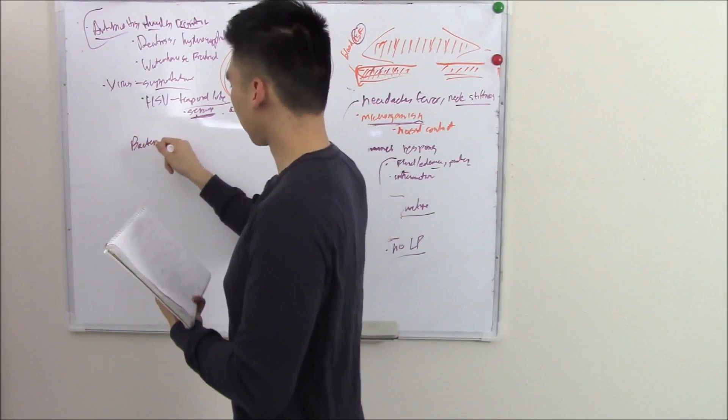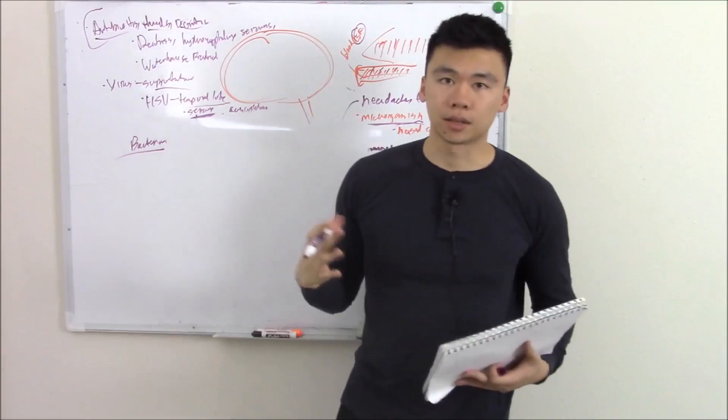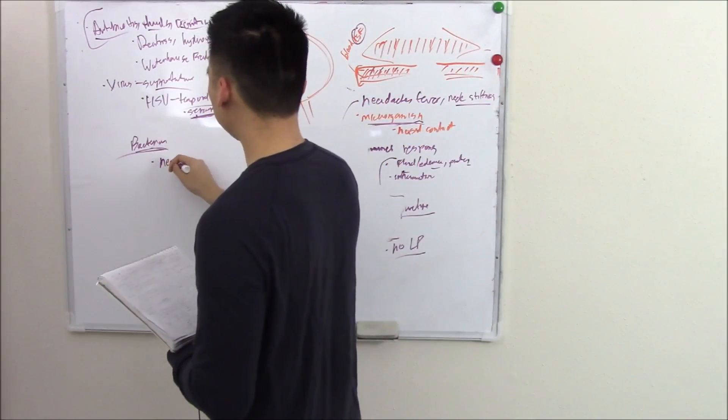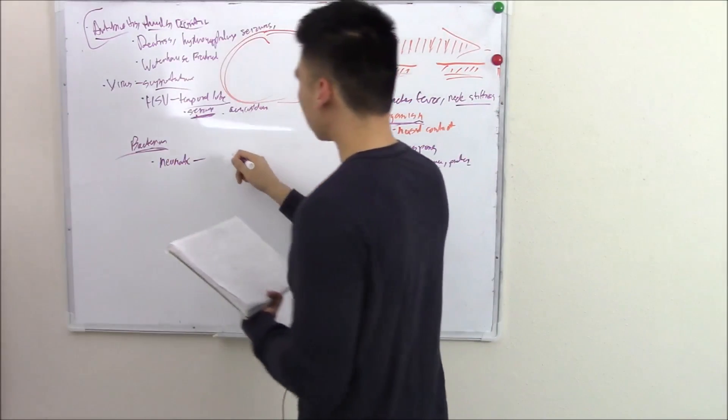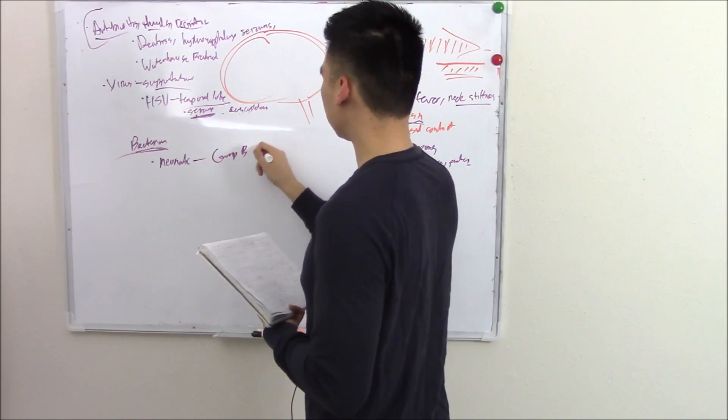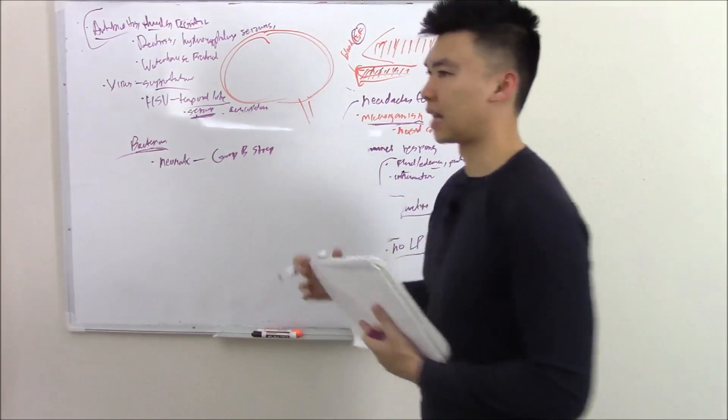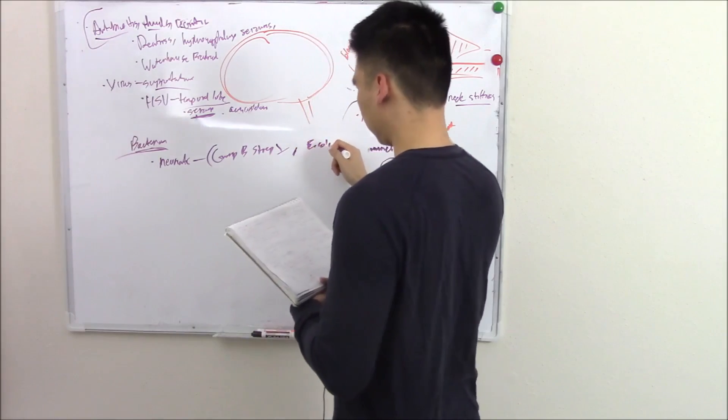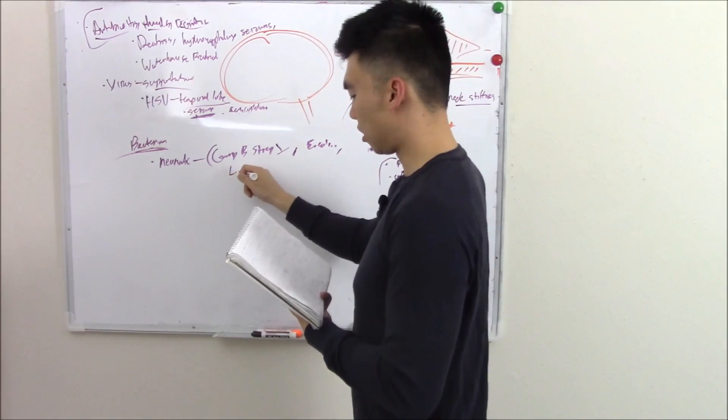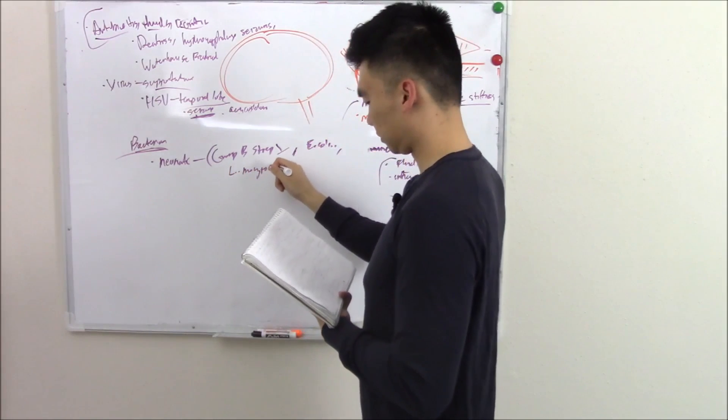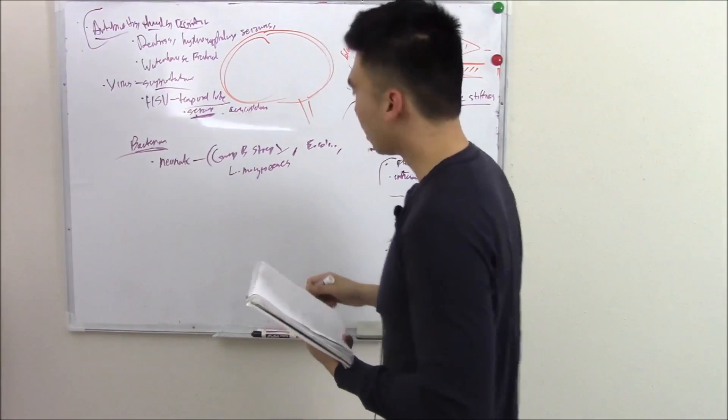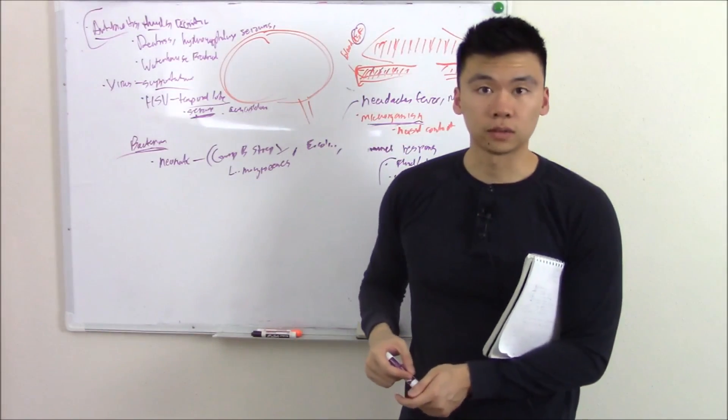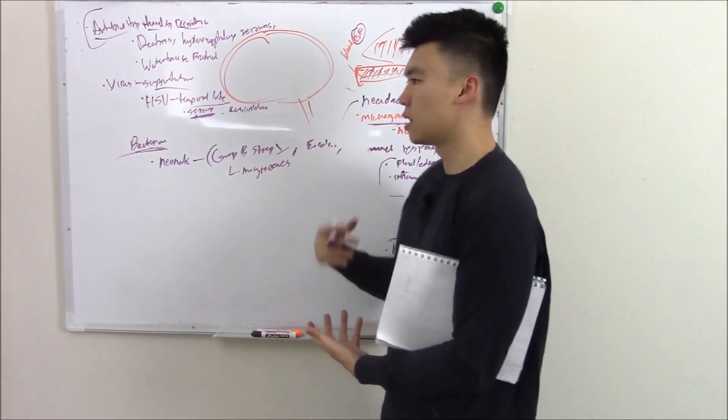So let's just talk about some bacterial causes. They change depending on how old the patient is. The change with the patient's age and a neonate, a little baby. They're most often group B strep, usually the group B strep that colonizes the vaginal canal that just came out of. E. coli and L. monocytogenes.